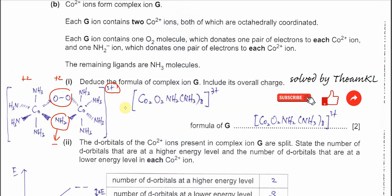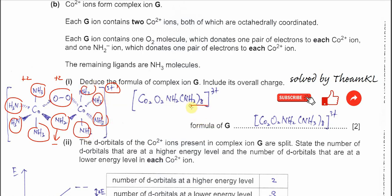Since the two bridging ligands are accounted for, the rest are all ammonia. Counting the remaining coordination sites gives one, two, three, four, five, six, seven, eight — so there are eight ammonia ligands in total. The overall charge is 3+, so you write the formula of complex ion G with this charge.